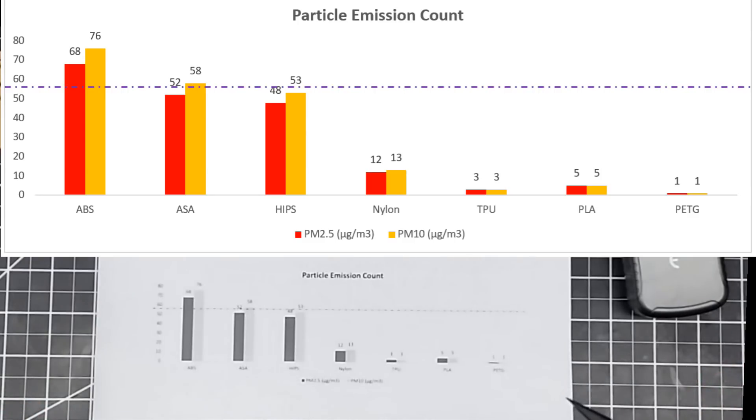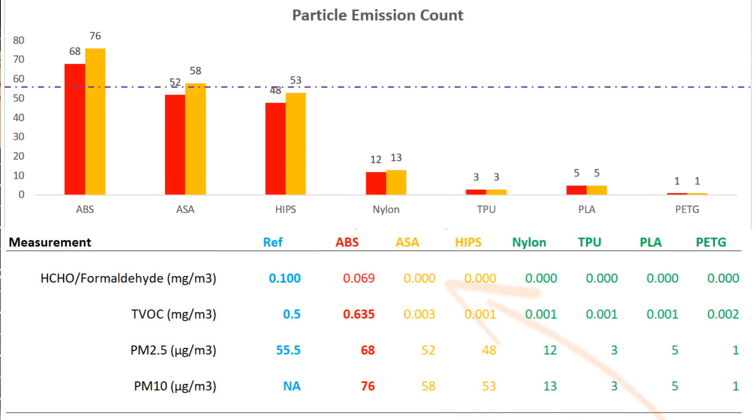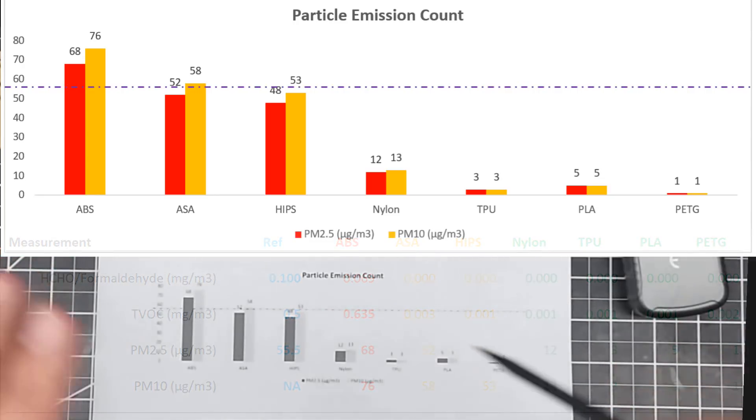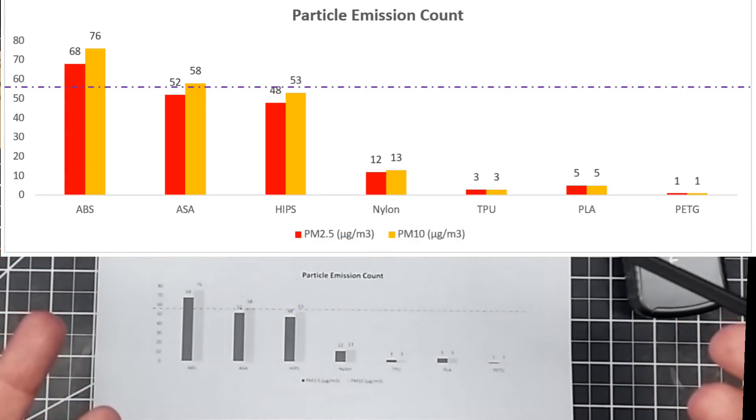But again, while I did not see any formaldehyde and very low VOCs, I still saw a pretty significant particle release near that of ABS. So it's putting out something that I or my family could be breathing in. So I will only print it with external evacuation on my printers. I won't print it where the gas is released into my home.